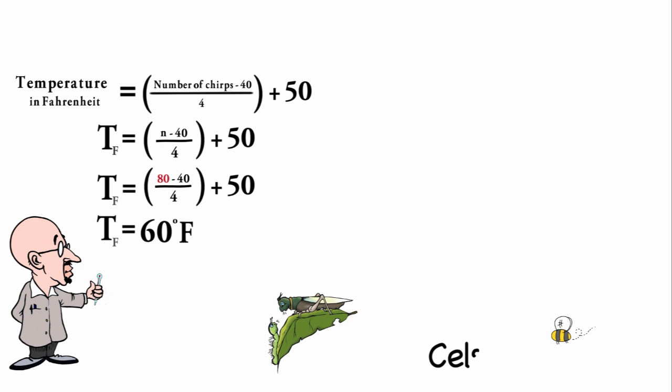What if we need the temperature in Celsius instead of Fahrenheit? Well we have an equation that relates the temperature in these two scales. The temperature in Celsius is equal to 5 ninths times the quantity of the temperature in Fahrenheit minus 32.